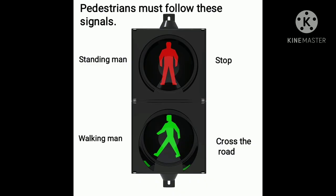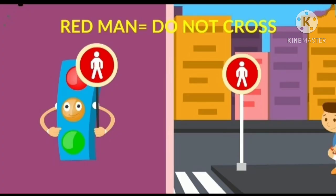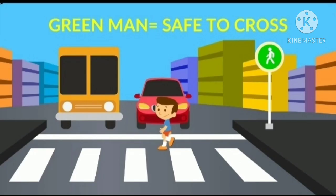Pedestrians must follow these signals: the standing man means stop, the walking man means cross the road. The red man means do not cross the road — if you see the red man, you should not cross the road. The green man means it is safe to cross — yes children, you can walk now.